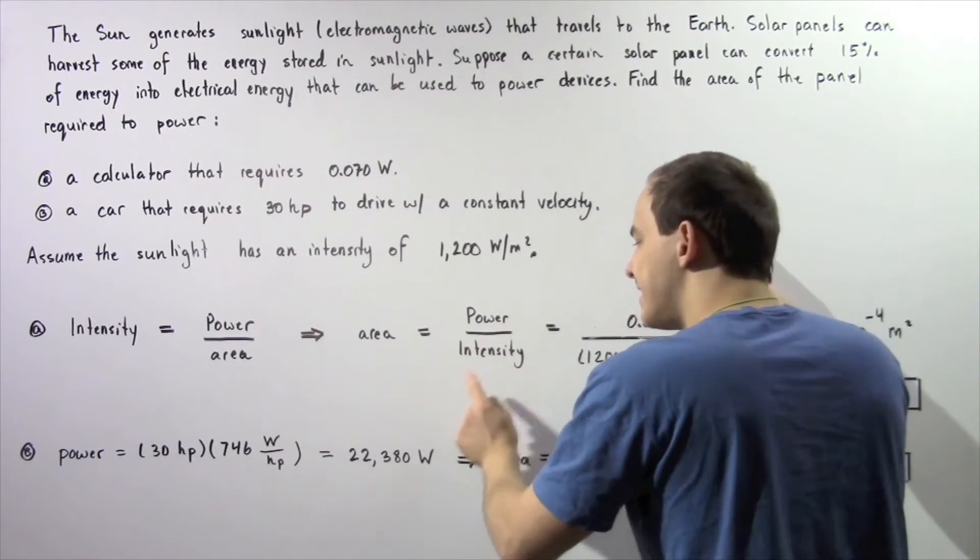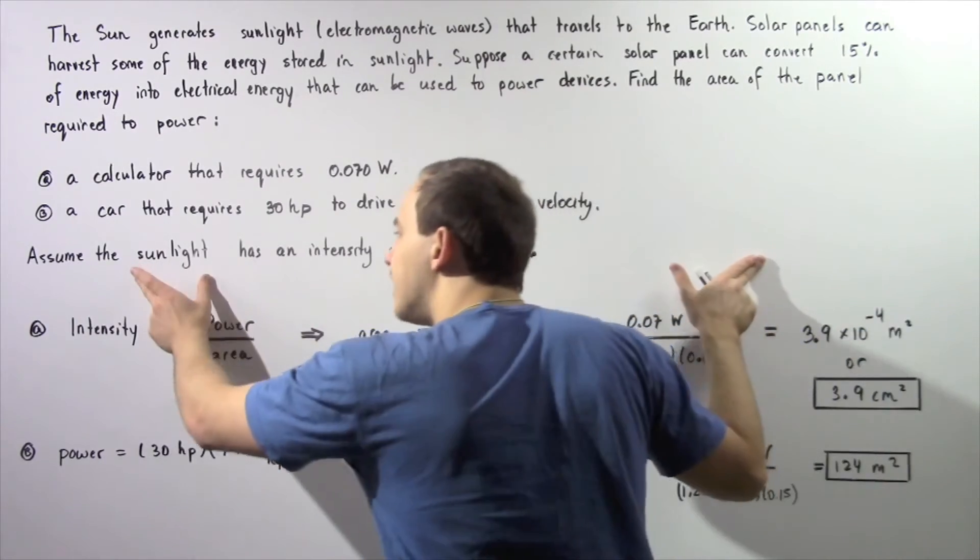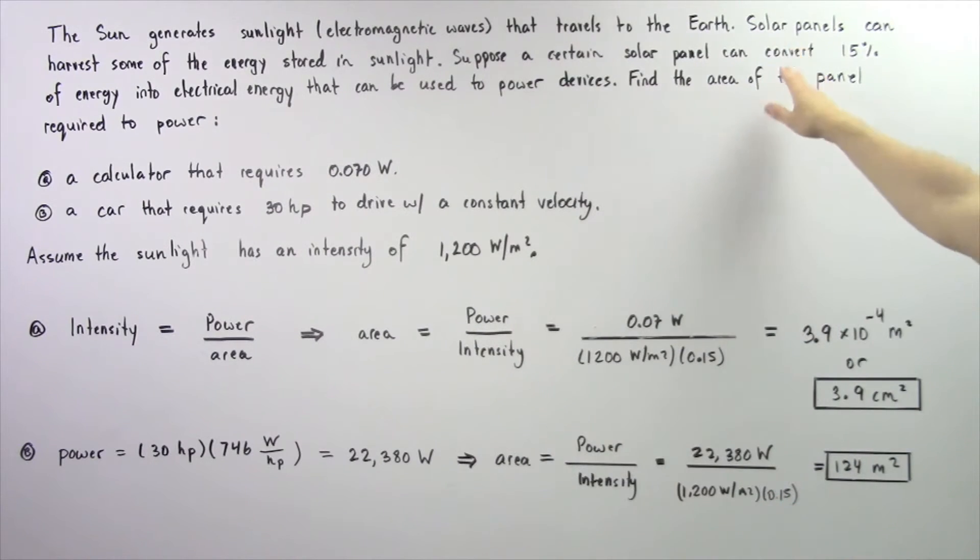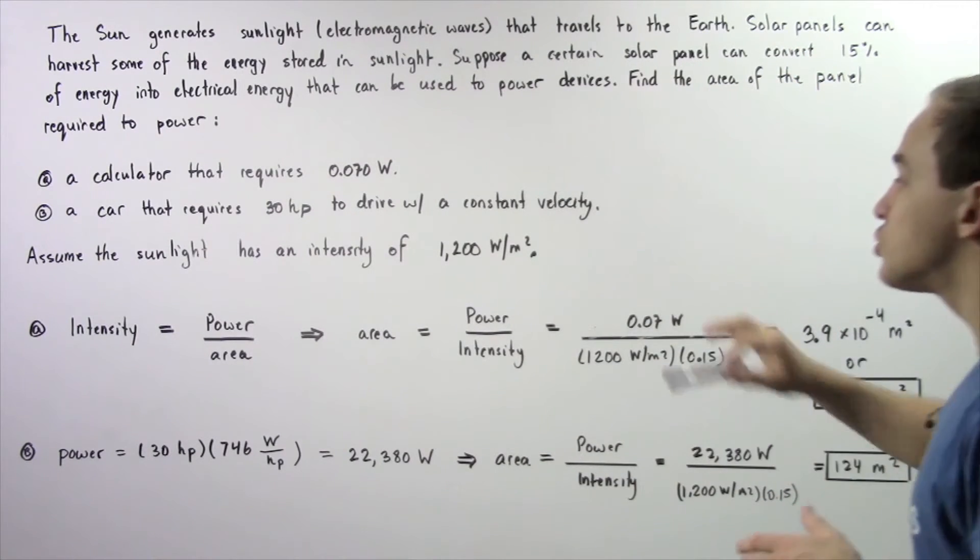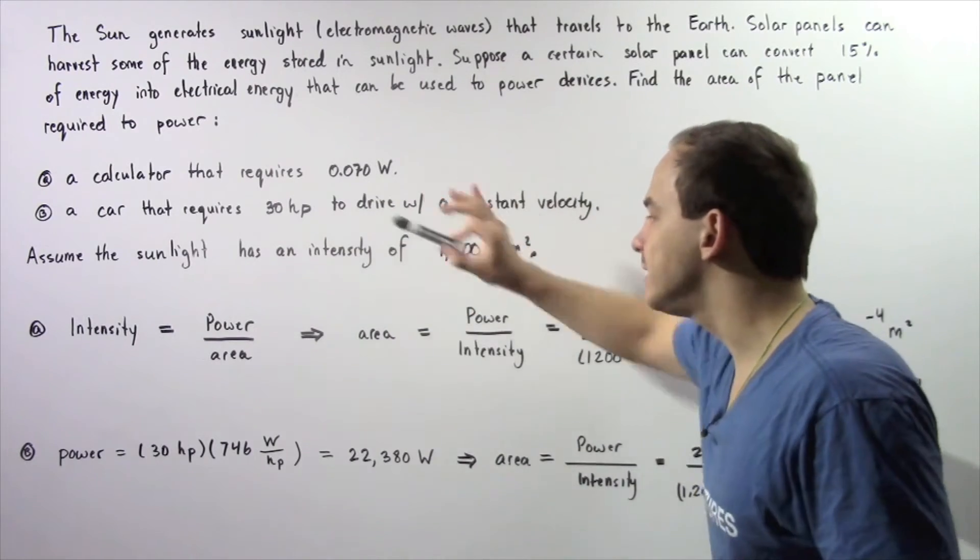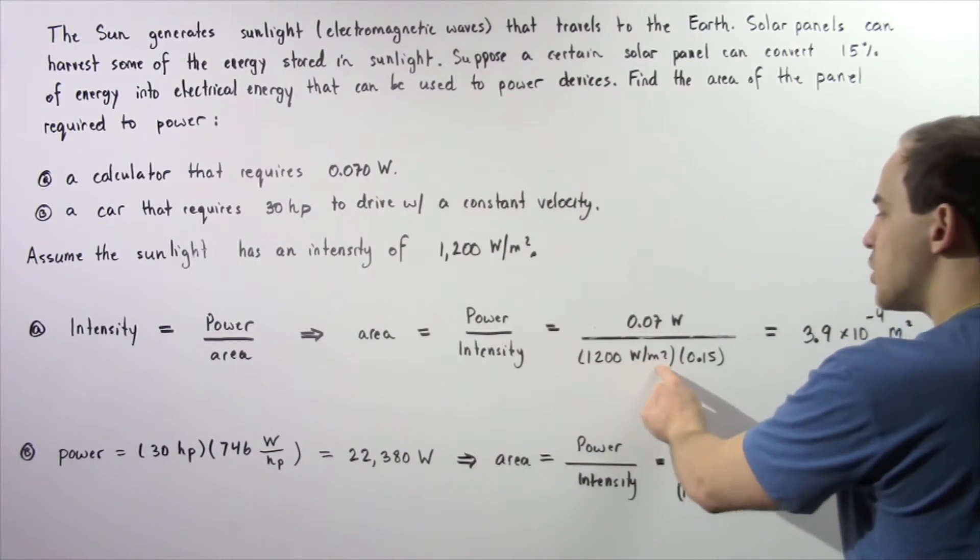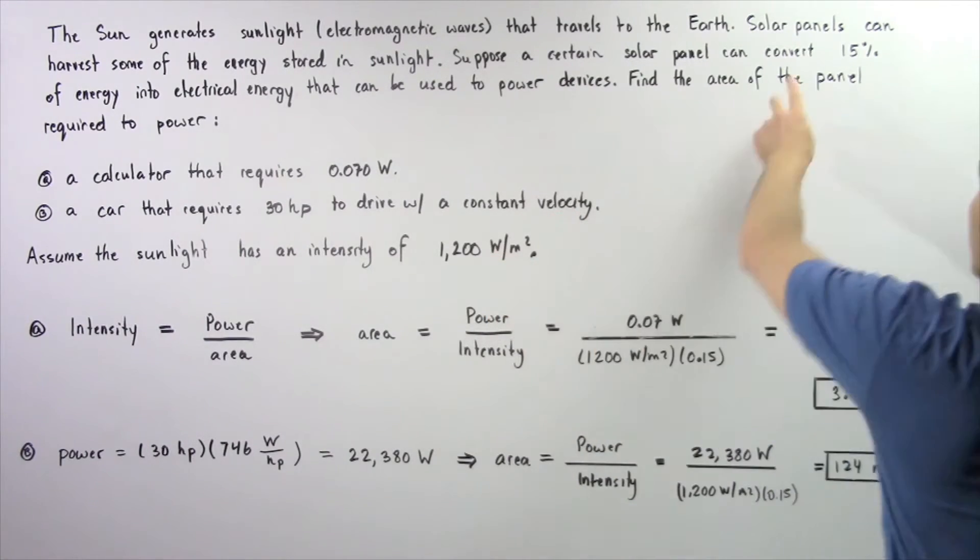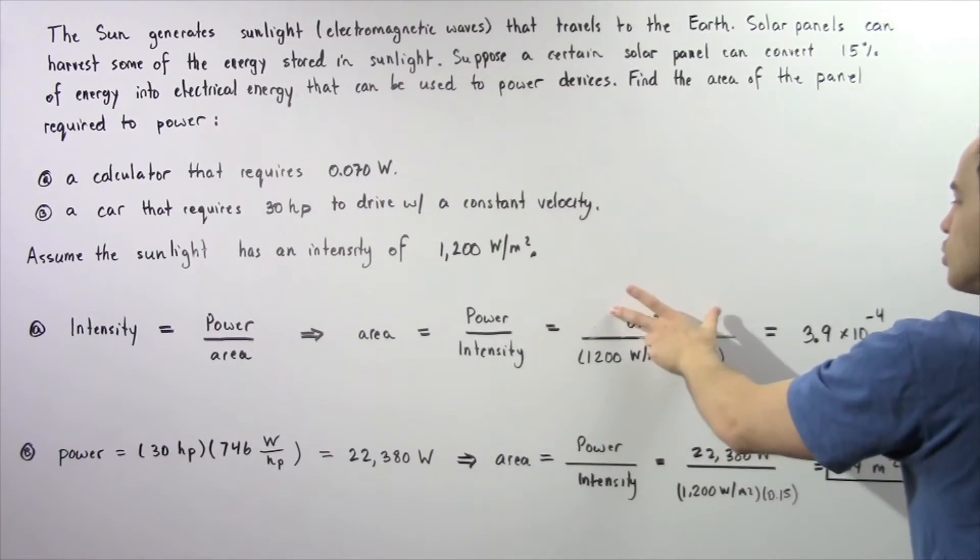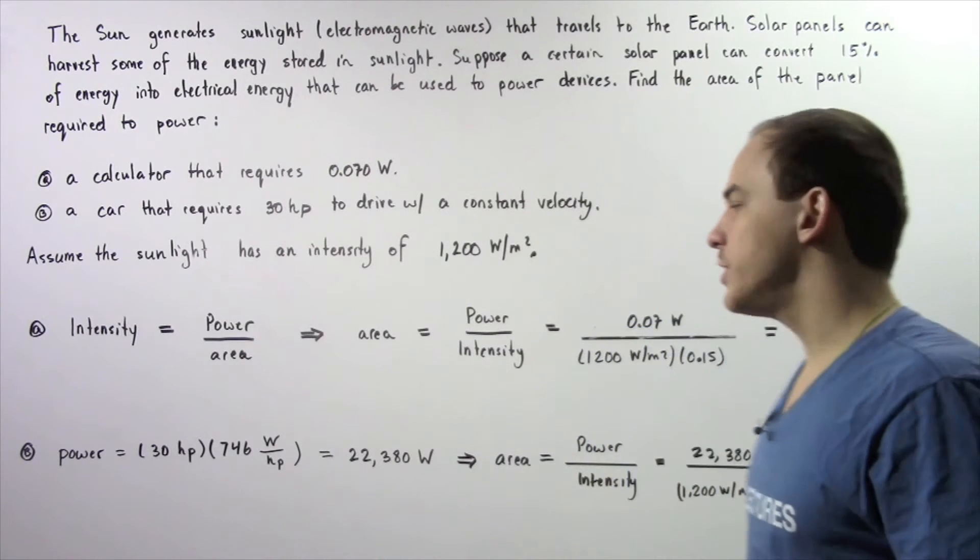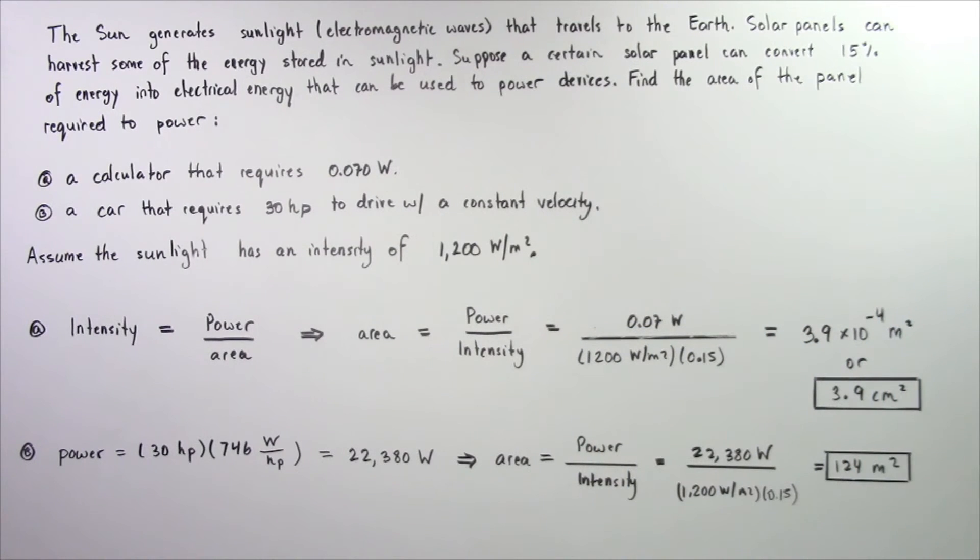This intensity is not the intensity of the sunlight. This intensity is the intensity that is captured by the solar panel, so it's 15% of this quantity. This intensity is equal to 1,200 watts per meter squared multiplied by 0.15. This divided by this gives us a value of about 3.9 times 10^-4 meters squared, or equivalently 3.9 centimeters squared.